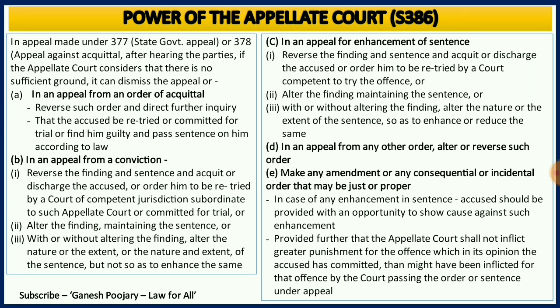Subsection D discusses about appeal from any other order, and the Appellate Court has the right to reverse such order and further it can make any amendment or any consequential or incidental order that may be just and proper. However, while doing so it should not enhance anybody's punishment. If it is doing so, it should give an opportunity to the accused to show cause why the court should not do that — that opportunity must be given.